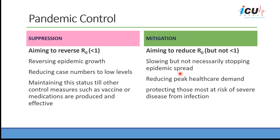So it looks like it's important to select a strategy, and it is also important to understand the impact of this strategy on the outcome of the pandemic. The first strategy is suppression, which aims to reverse the R0, bringing it down below 1. That means it's going to reverse the epidemic growth and will reduce the case numbers to low levels in the community.